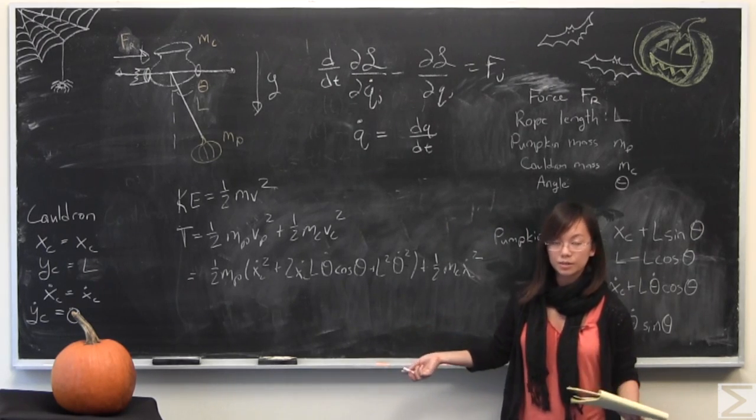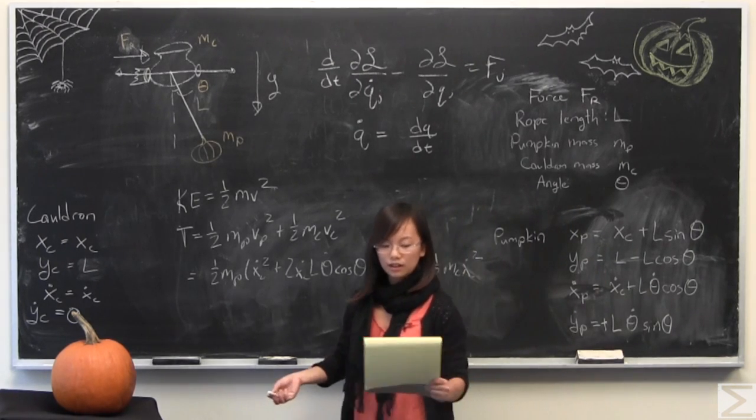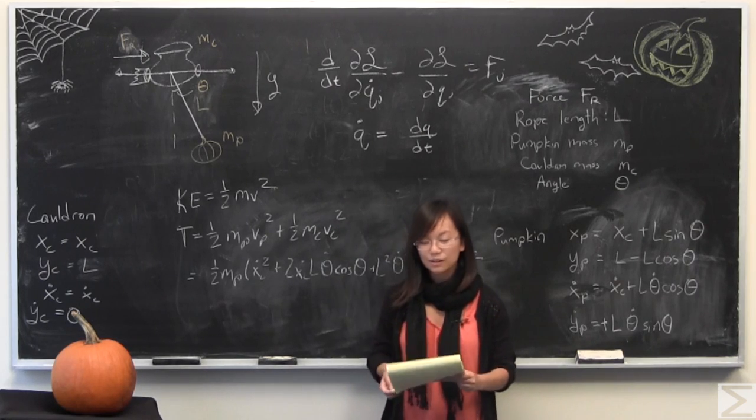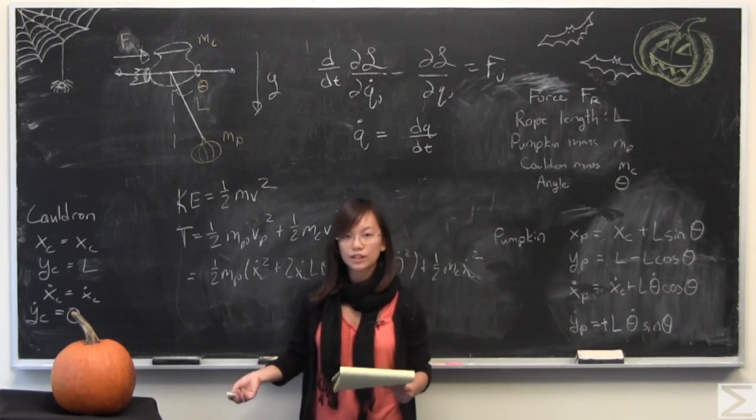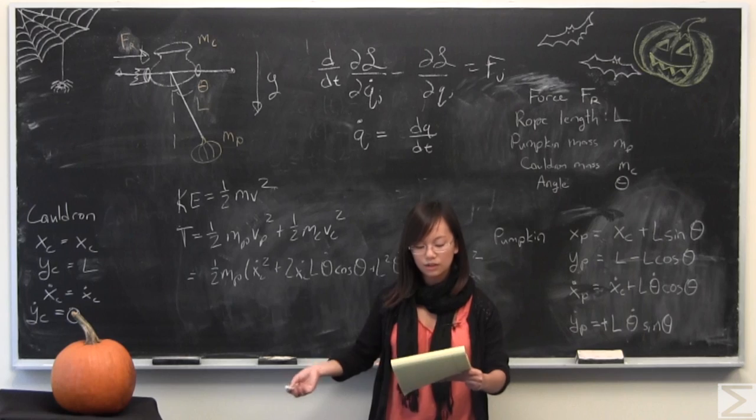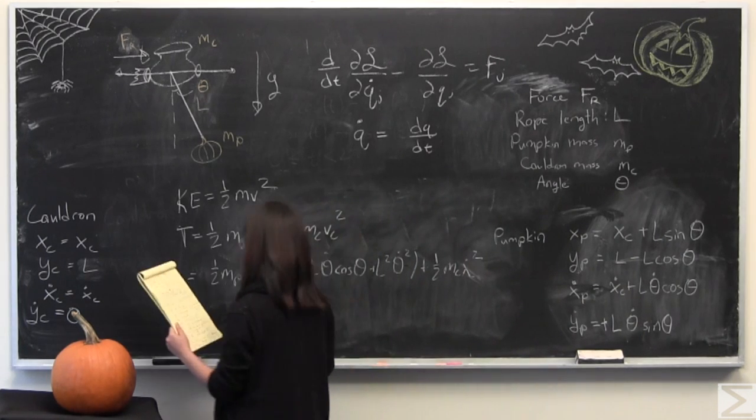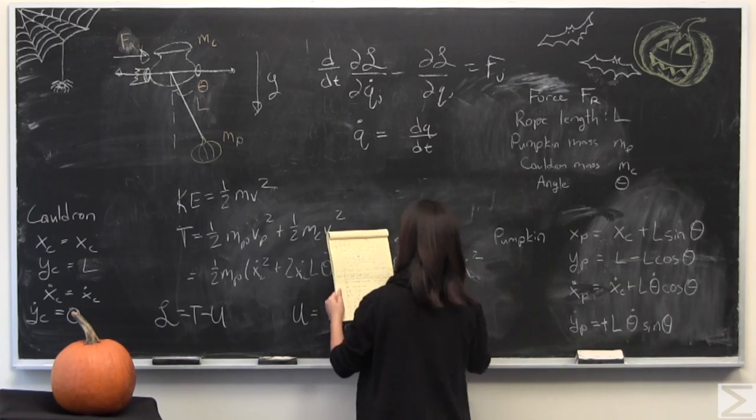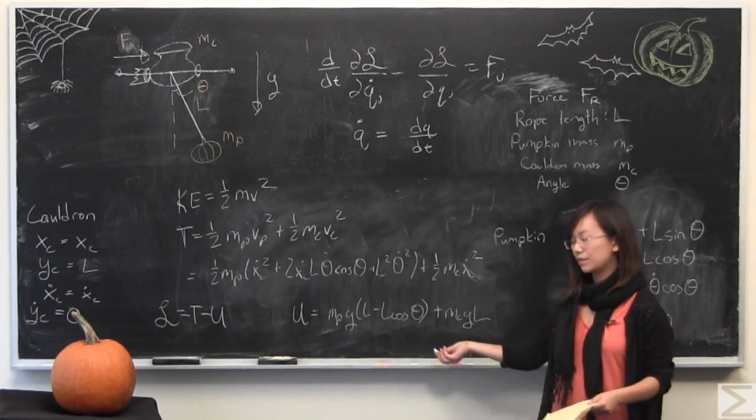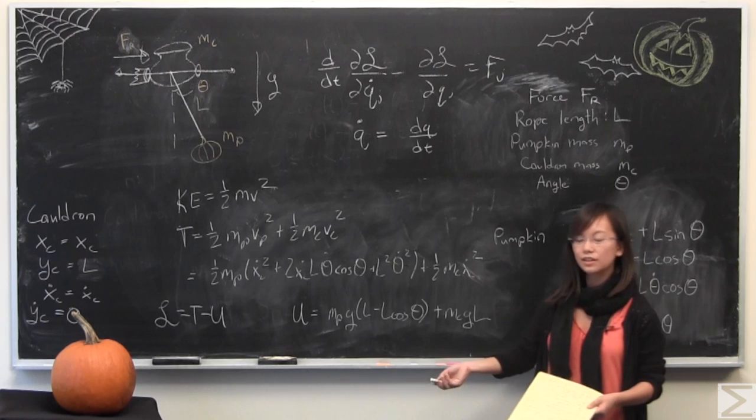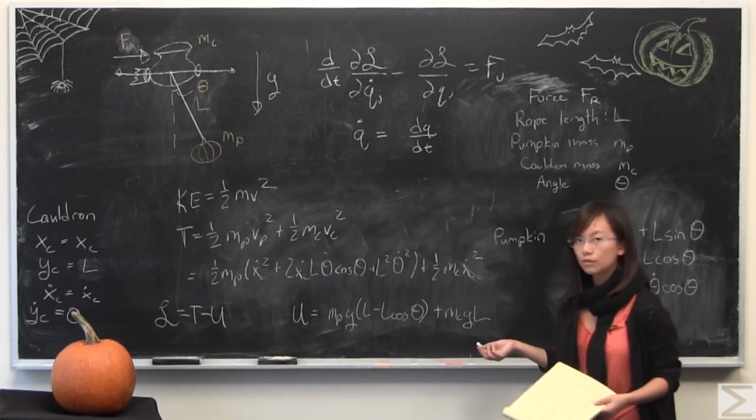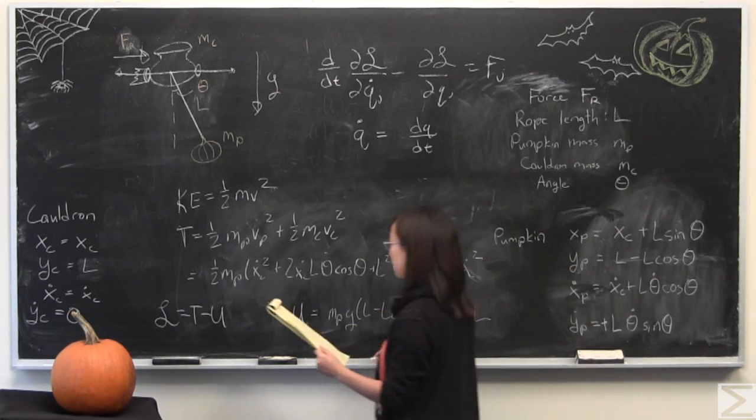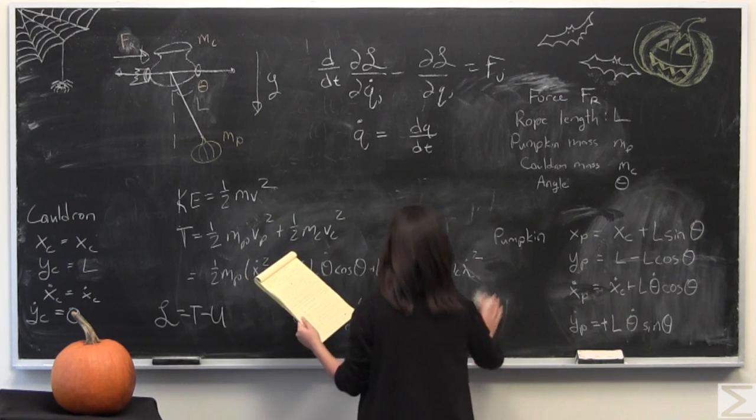Next is to find the potential energy so we can find the Lagrangian equations of motions, because Lagrangian is equal to T minus U, where U is potential energy. Potential energy is given by the gravitational potential energy, and we have the y heights of both of them. This is very easy now. I'm going to now calculate L.